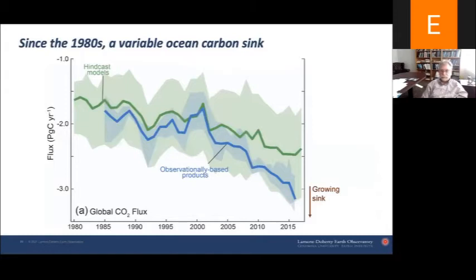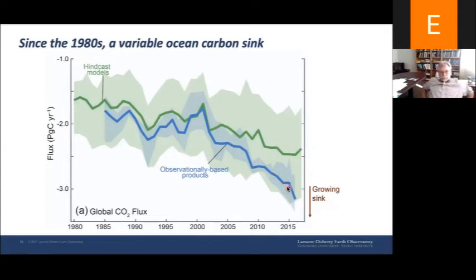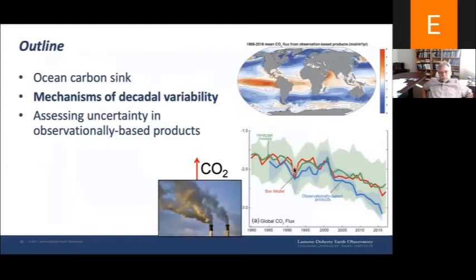Ocean biogeochemical hindcast models provide another way to understand the ocean carbon sink. Comparing the observationally based products in blue and the hindcast models in green, we see quite similar patterns of variation: an ocean carbon sink growing over time, a stagnation in the 1990s, and then a recovery afterwards. Only in recent years do we have this consistent view. Now we ask: what caused this decadal variability? Why the stagnation and then the subsequent growth? That's what I want to address when I talk about mechanisms of decadal variability.